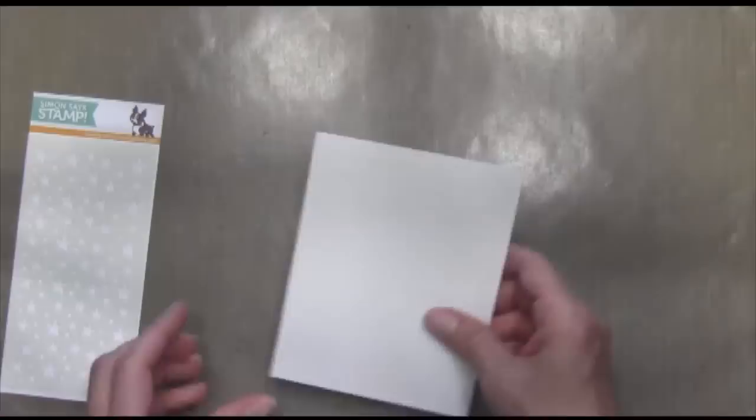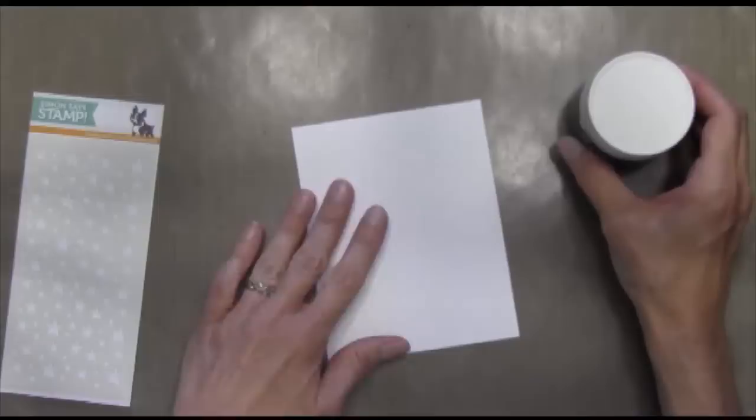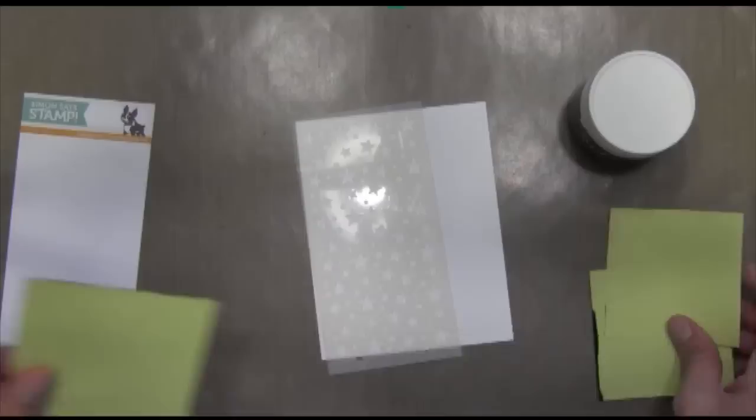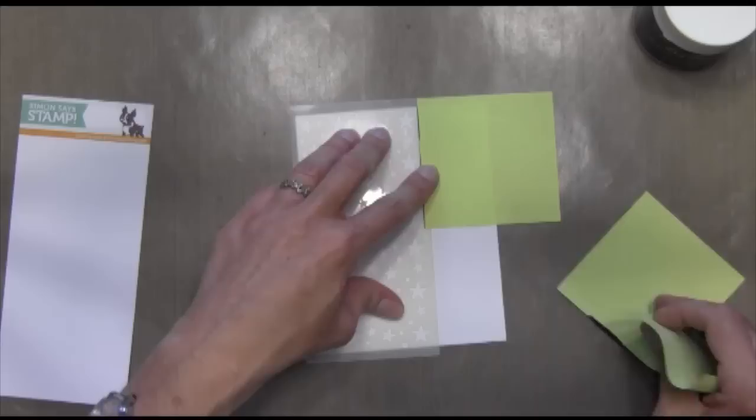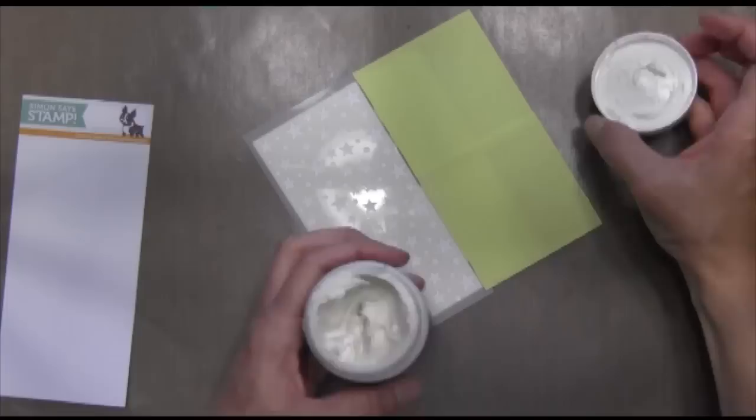The first thing I'm going to do is take a piece of Neenah Solar White cardstock and some embossing paste. This is just a four and a quarter by five and a half inch piece of cardstock. I'm going to hold my stencil in place with some post-its, putting half of the sticky part on the stencil and half on the paper so that it stays in place.